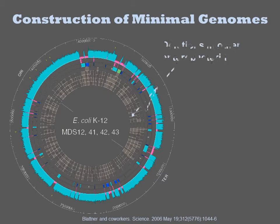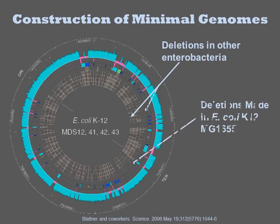In this figure, the inner rings indicate deletions present in other enterobacteria, and the outermost ring indicates those that were successfully removed from MG1655 in combination.